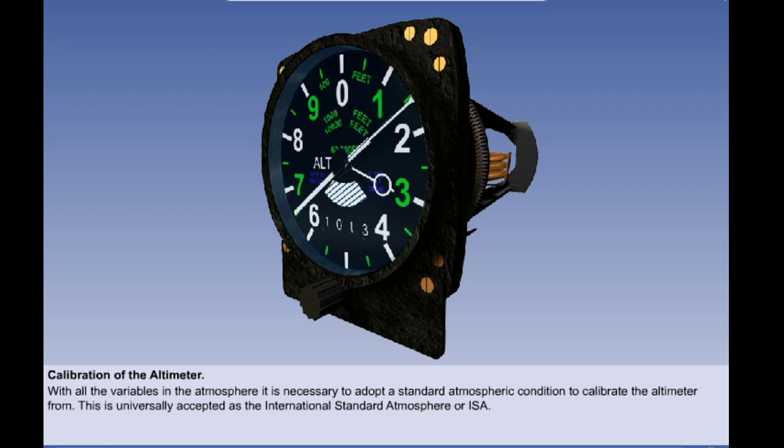With all these variables in the atmosphere, calibration of the altimeter is a complex matter and it is necessary to assume an average or standard atmospheric condition from which to apply any necessary corrections. The atmospheric condition universally adopted as standard is known as the International Standard Atmosphere or ISA.